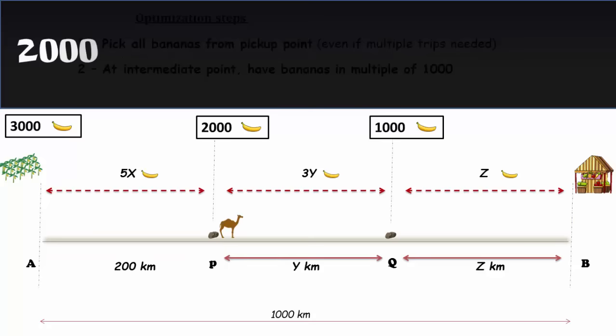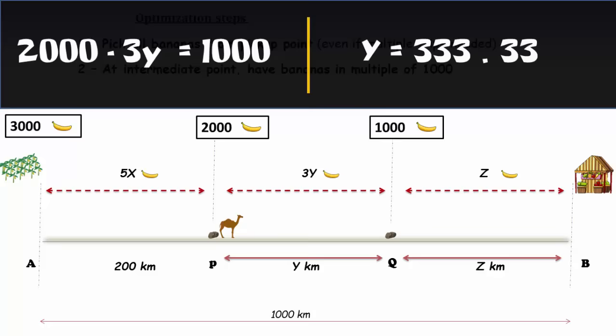The same way, 2000 minus 3Y equals 1000. So the length of segment PQ would be 333.33 kilometers. But the variable Y also represents the number of bananas which cannot be fractional. So to solve this issue, you can set the point Q at a distance of 333 kilometers from point P. In one forward trip, the camel would consume 333 bananas which makes the number of bananas as 1001 at point Q.